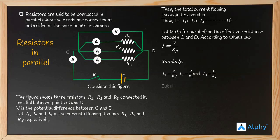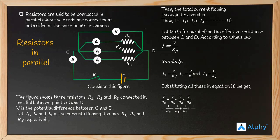Considering the total current equation for Rp: V by Rp equals V by R1 plus V by R2 plus V by R3. Cancelling the common factor V from both sides, we get: 1 by Rp equals 1 by R1 plus 1 by R2 plus 1 by R3.